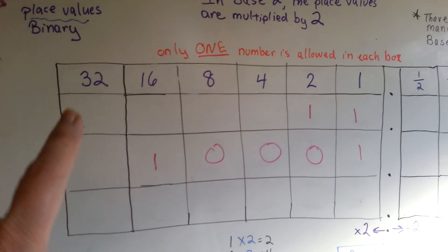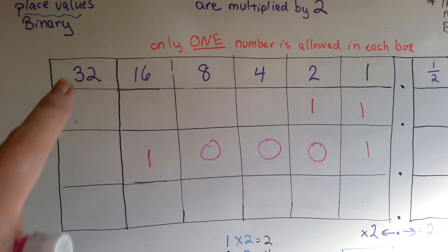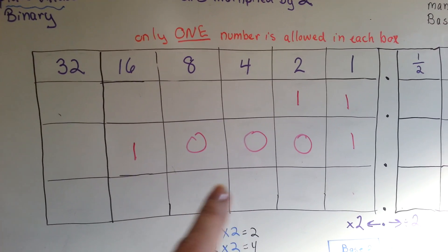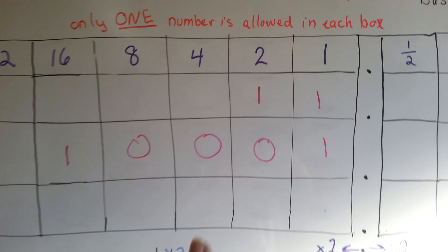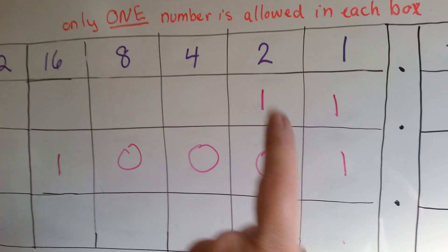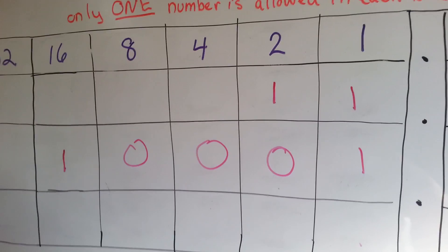If you wanted to do the number 33, you'd have a 1 here, 0s for placeholders, and a 1 there. Now, what happens when you get too many in one place value?